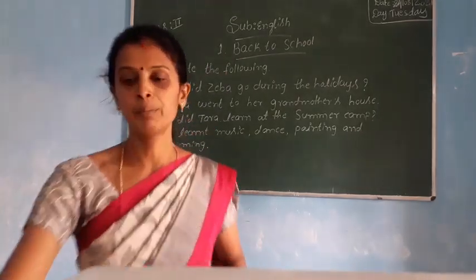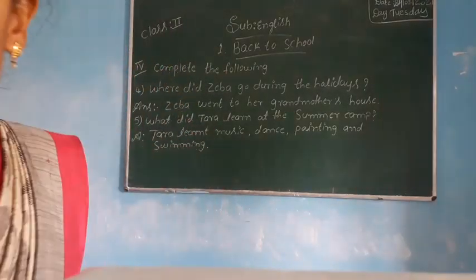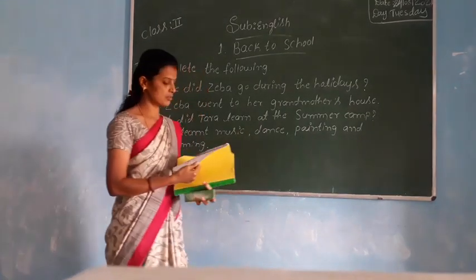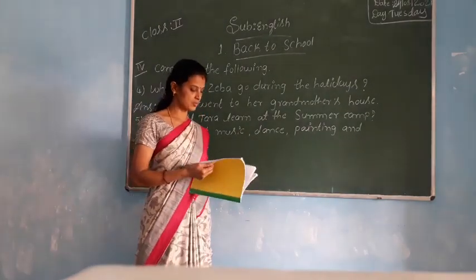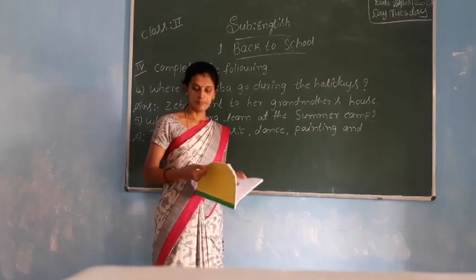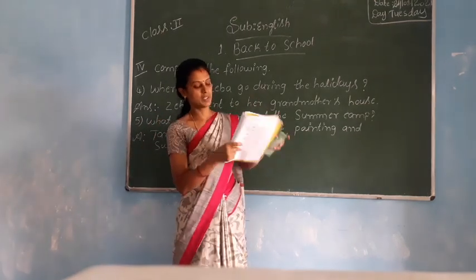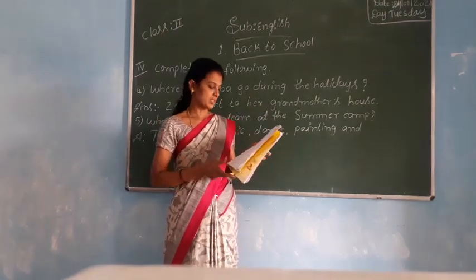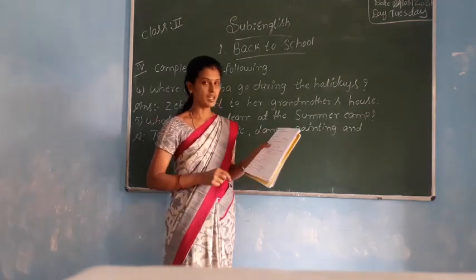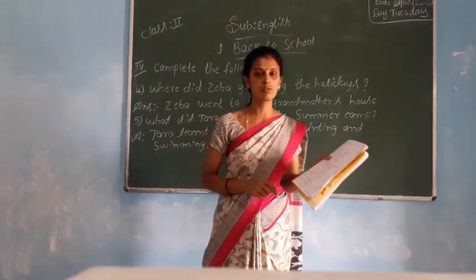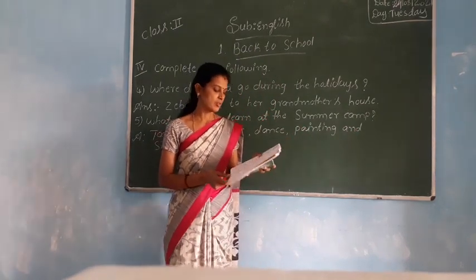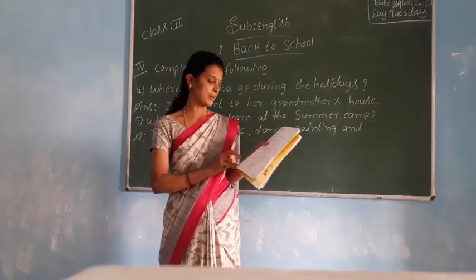Children, in previous class we have discussed about these names of children's answers. I will repeat for you. First one: why is Tara happy? Tara is happy because she is going to meet her friends. So that's why Tara is happy.